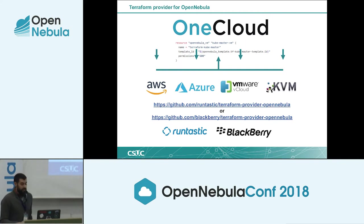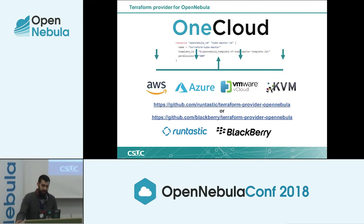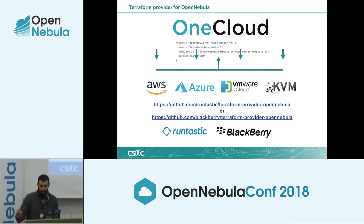We have a tool that is not cloud-agnostic by itself, but we have OpenNebula which can talk with most of our public providers. Thanks to Rentastic and BlackBerry, we also have a Terraform provider for OpenNebula. OpenNebula gives us the freedom to deploy our infrastructure on different cloud providers just by choosing the correct templates. For example, if we want to deploy on AWS, we just select the AWS template on OpenNebula. If we want to deploy a virtual machine on a local KVM, we choose the template that deploys the VM on the local OpenNebula.